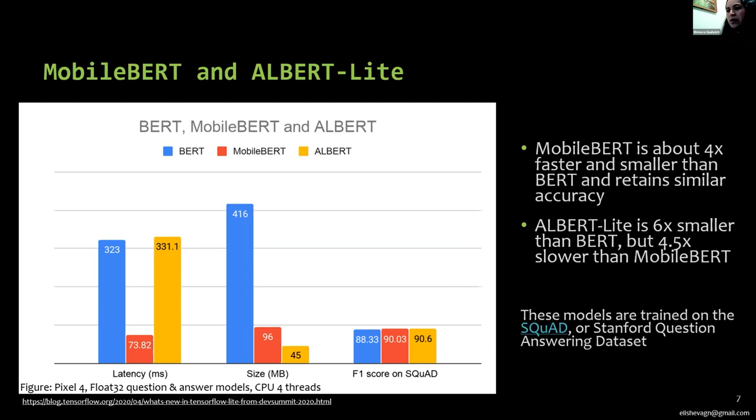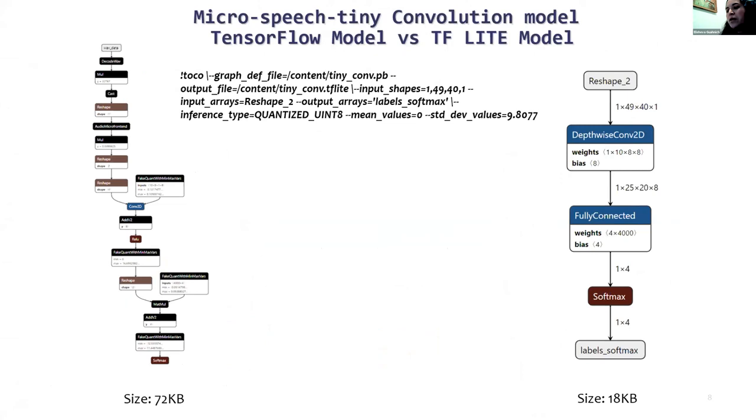These models are trained on the SQUAD, or Stanford's question answering dataset. That is a reading comprehension dataset consisting of articles from Wikipedia and a set of question answers for each article. Another example of model output reduced size is a micro-speech convolutional model, which is frequently used in microcontrollers. The input model in this case is a quantified model with float 32, and the output model is a quantified model with UINT8. The output model is four times smaller than its counterpart in TensorFlow.